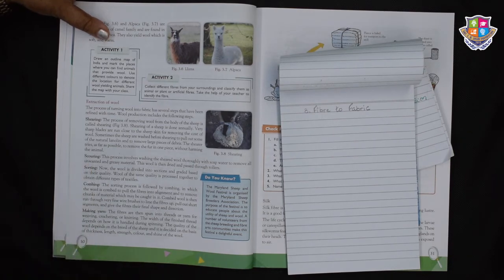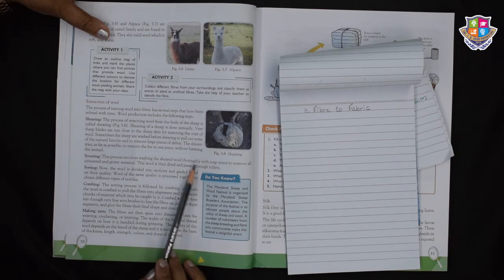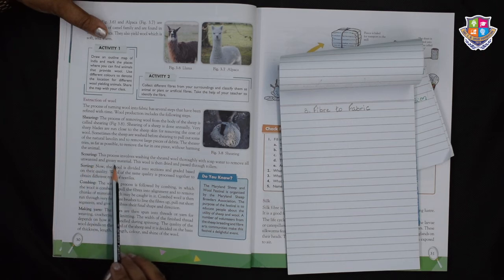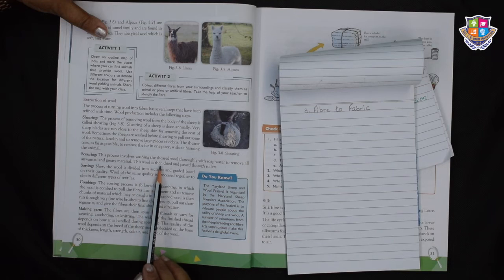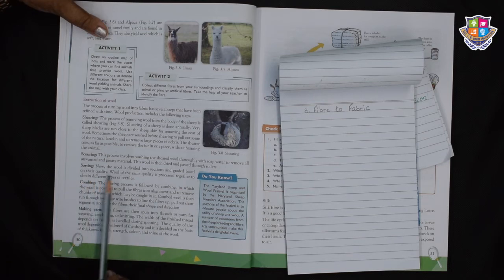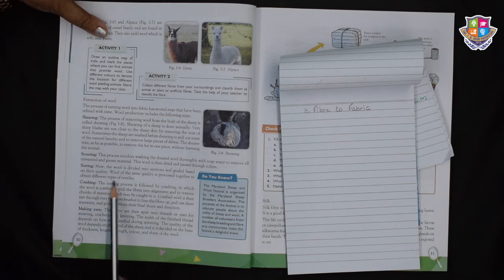And then we come to scouring. This process involves washing the sheared wool thoroughly with soap water to remove all unwanted greasy material. This wool is then dried and passed through the rollers. Then we have sorting. Now the wool is divided into sections and graded based on their quality. Wool of the same quality is processed together to obtain different types of textiles.